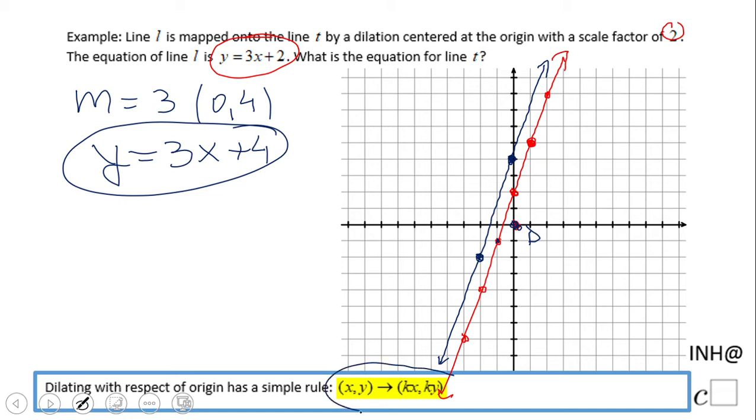Now I want you to take a look at this formula we have here. It's very simple: you take the y-intercept (0, 2), multiply by the scale factor (2), and you get the new y-intercept (0, 4). And the slope stays the same.